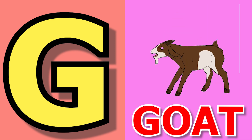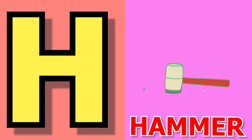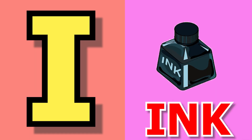G for goat, goat means bakri. H for hammer, hammer means a thoda. I for ink, ink means shahi.